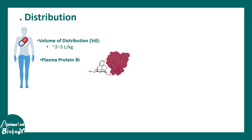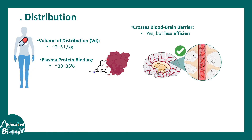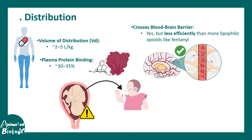For distribution, the volume of distribution is 2.2 to 5 L per kg, and plasma protein binding is 30 to 35 percent. Morphine can cross the blood-brain barrier and reach the brain, which is necessary for its central effects. It can also cross the placenta — the barrier between mother and fetus — and can sometimes lead to fetal respiratory depression and other problems in the fetus.